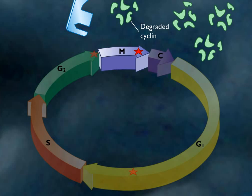After mitosis, the gradual accumulation of new cyclin starts the next turn of the cell cycle.